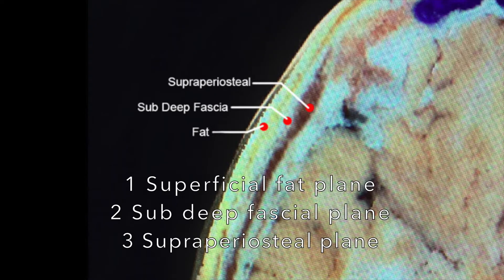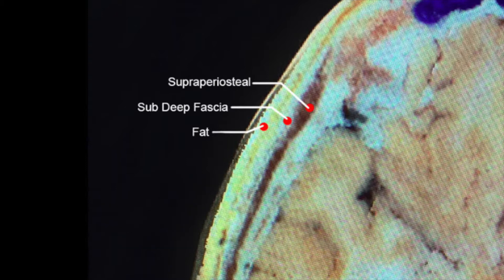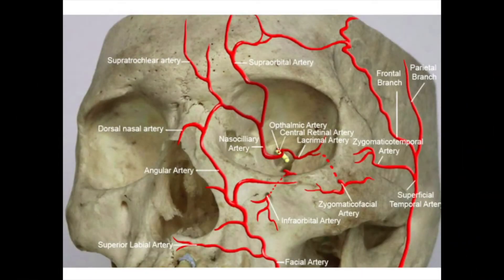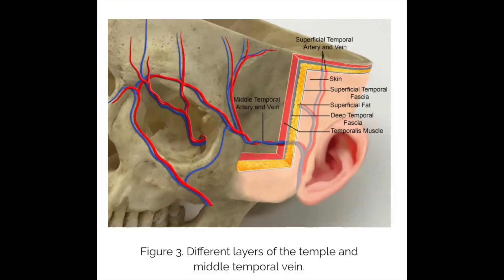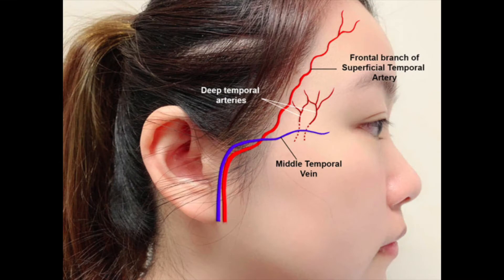The three planes are the superficial fat plane, sub-deep fascial plane, and supraperiosteal plane for filler deposit. To understand the danger and the plane, it is important that you know the anatomy of the layers here very well. The obvious danger in this section is the frontal branch of the superficial temporal artery, which sits in the superficial fascial plane — the layer immediately under the skin. Its course is variable, but the injector must assume this is in the way of the needle.